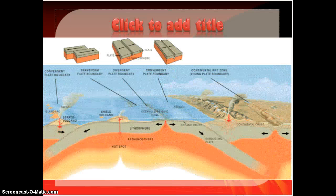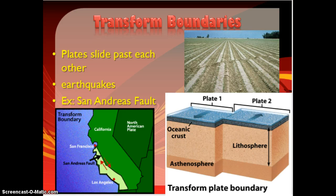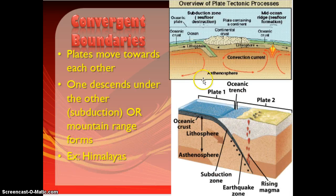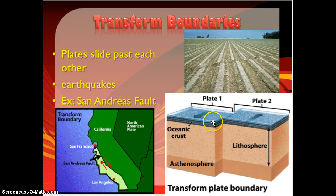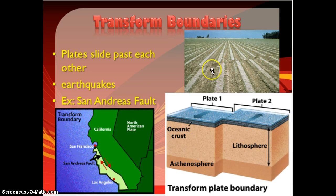Here's a diagram that shows you all three boundary types. Transform boundaries are when the plates slide past each other — instead of convection currents pushing them towards or away from each other, they are pushing them so they slide in opposite directions. When they slide past each other, you get lots of earthquakes. The San Andreas Fault is probably the most famous of these transform boundaries. This results in valleys and places where the earth erodes down the middle of where the two plates are passing.